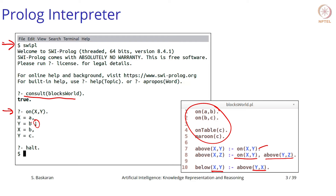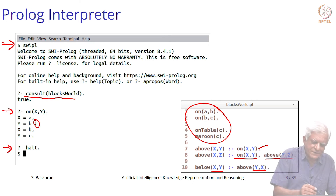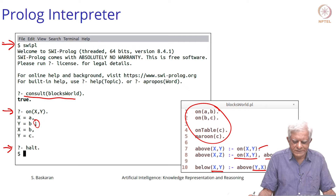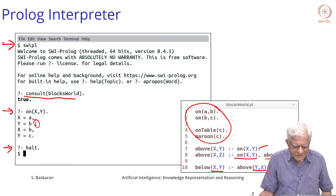Some versions of Prolog will give you all answers at once; other versions give one answer at a time and you press carriage return to get the next answer — that is a matter of implementation. You can also issue the halt command to terminate the session.